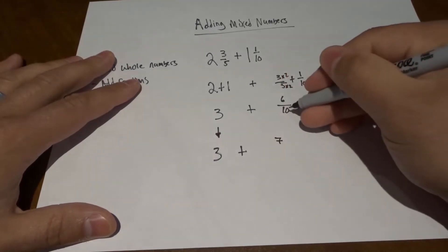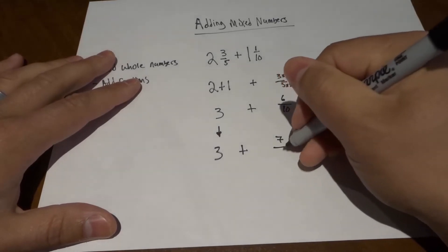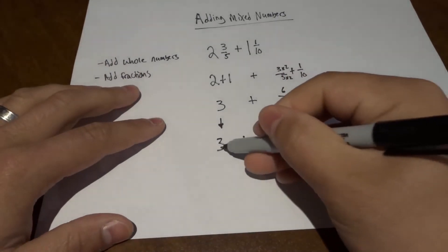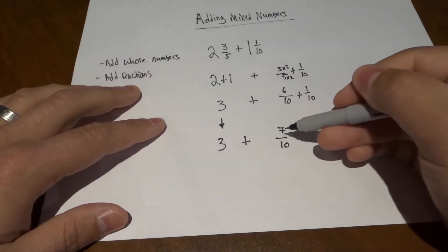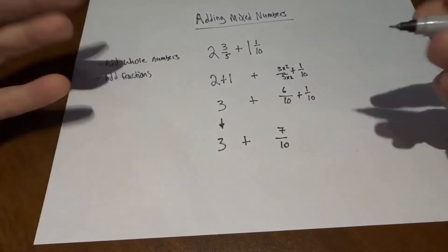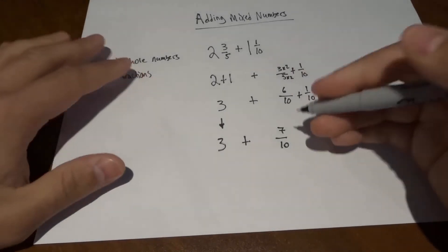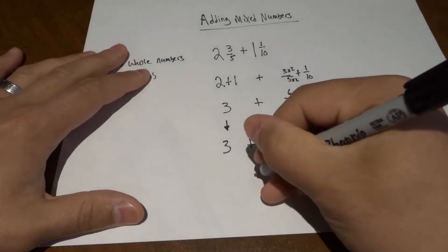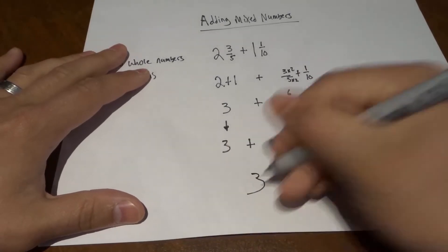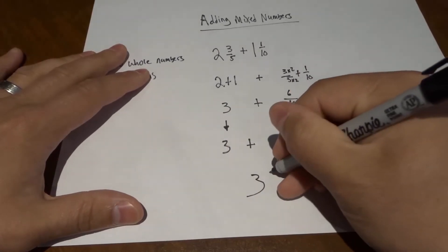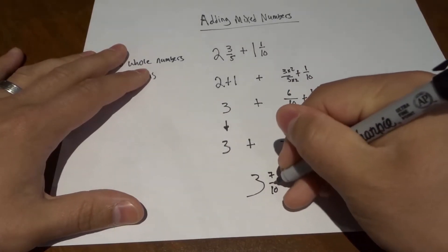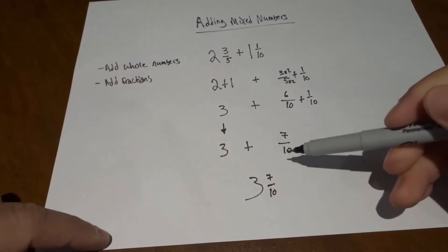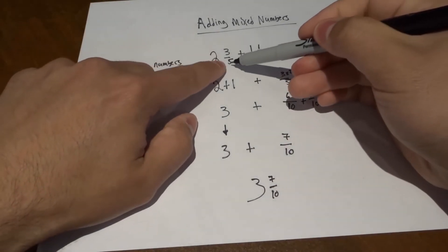The denominator ten stays the same, giving us seven over ten. So what we have here is three and seven-tenths. Written as a proper mixed number we have a big three and then seven over ten. That's the final answer: two and three-fifths plus one and one-tenth equals three and seven-tenths.